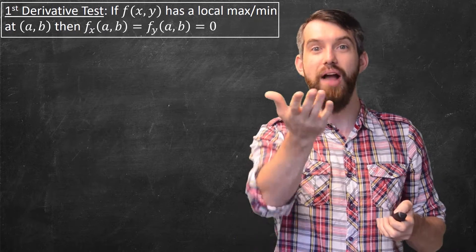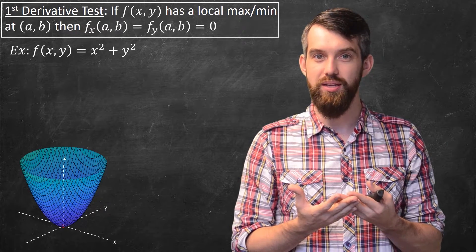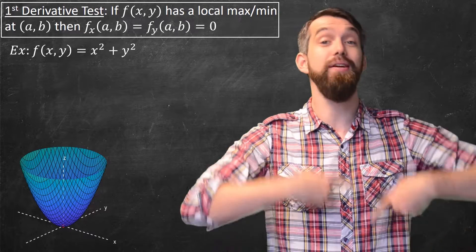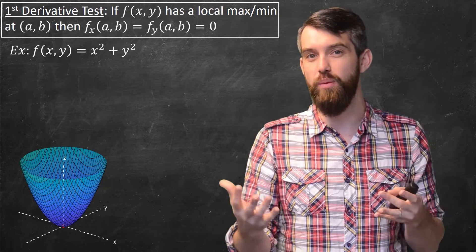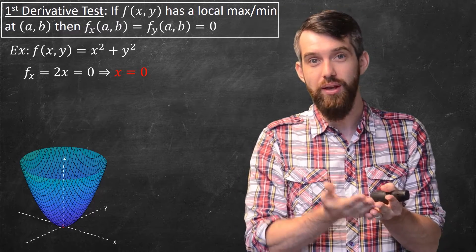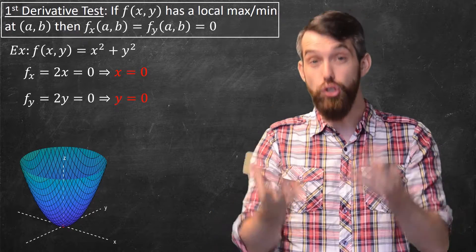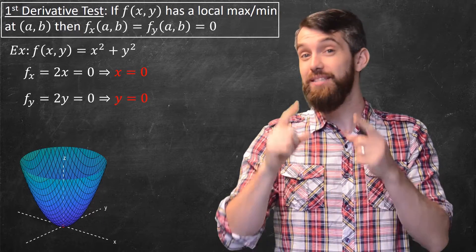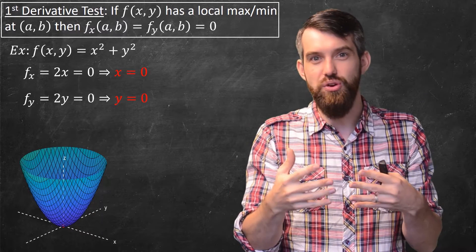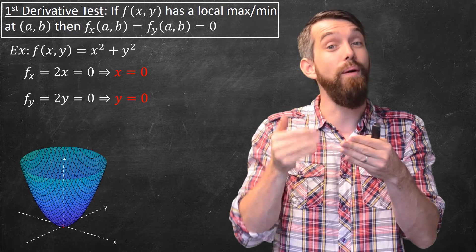This is the exact analog of the previous theorem in single variable calculus. Now let's see an example. I'm going to give the parabola x squared plus y squared. If I want to figure out where the partial derivatives equal zero — the candidates to be a maximum or minimum — I take the first partial derivative, which is 2x, set that to zero, and that gives x equal to zero. Taking the partial derivative with respect to y gives 2y, set that equal to zero, and you get y equal to zero. Just because the partials are both zero doesn't tell you whether it's a maximum or a minimum or neither.